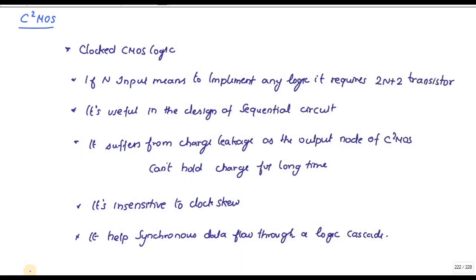Let me discuss C-squared CMOS logic. C-squared CMOS logic is nothing but clocked CMOS logic. If there are N number of inputs, implementing any logic requires two-N plus two transistors. This design is useful for sequential circuits.